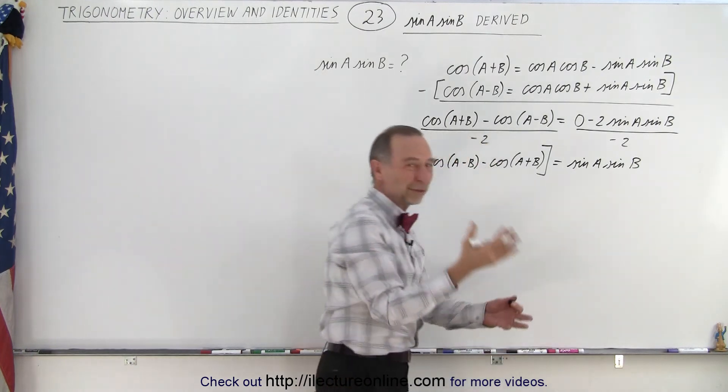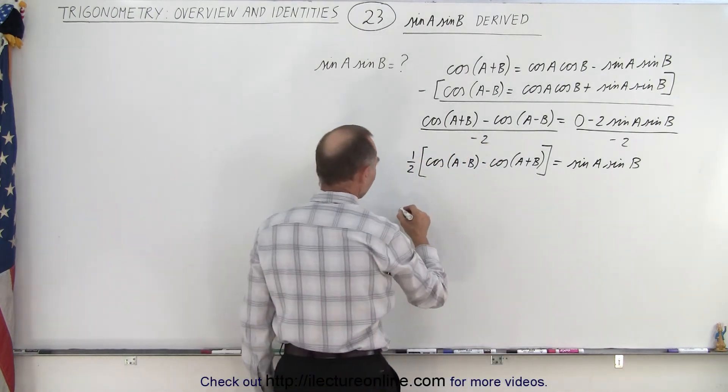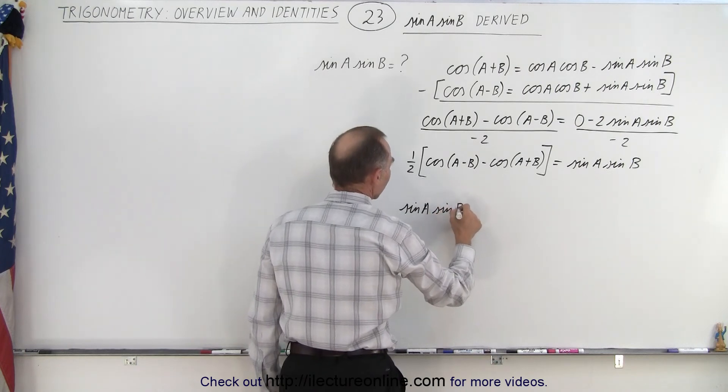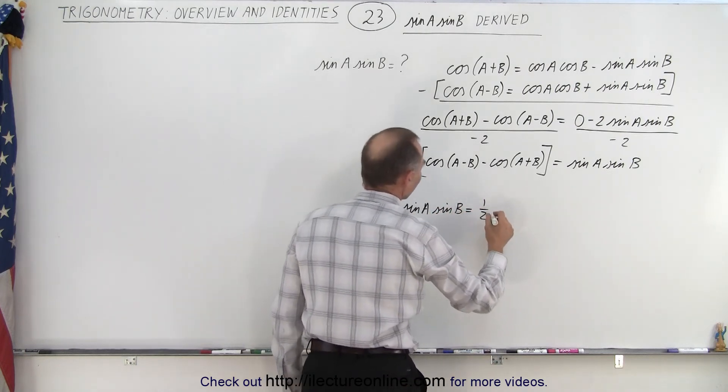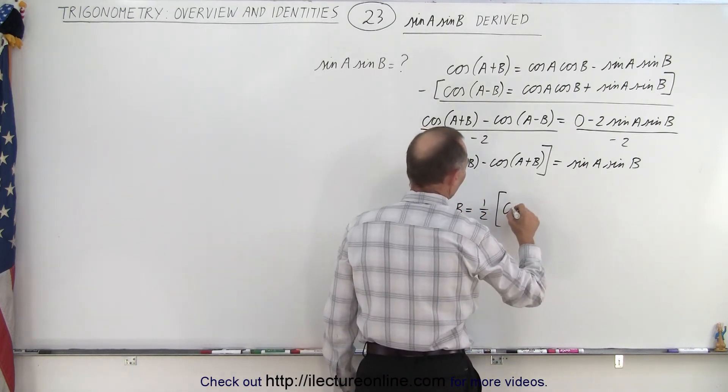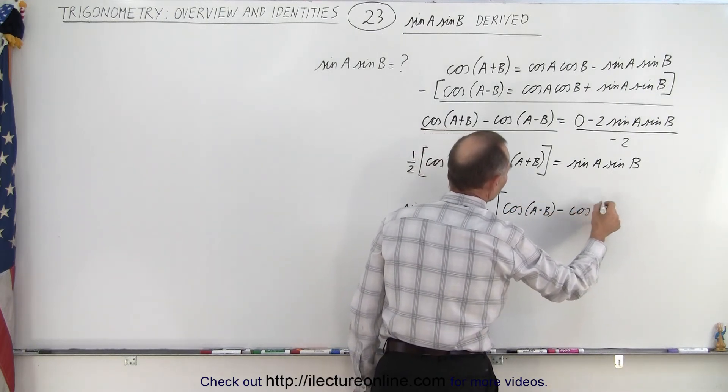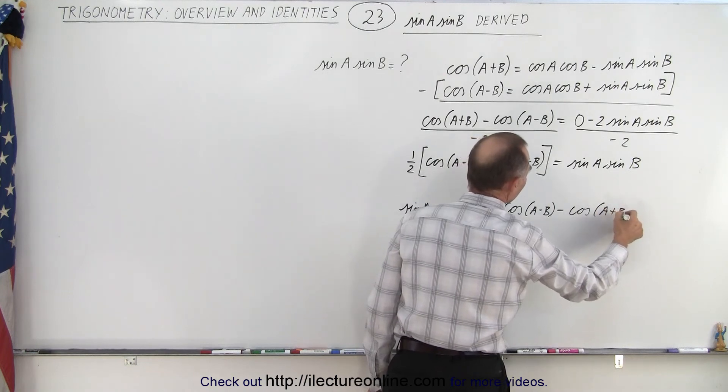Of course, you want to turn that around, so we're going to finally say that sine of a times sine of b is equal to one half times the cosine of a minus b minus the cosine of a plus b.